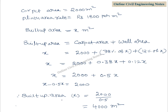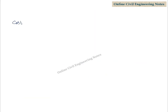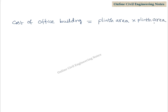The plinth area rate is given as Rs. 1,800. Built-up area is the same as plinth area. Now, calculate the cost of the office building. Cost of office building = plinth area × plinth area rate = 4,000 × 1,800 = Rs. 72 lakhs.